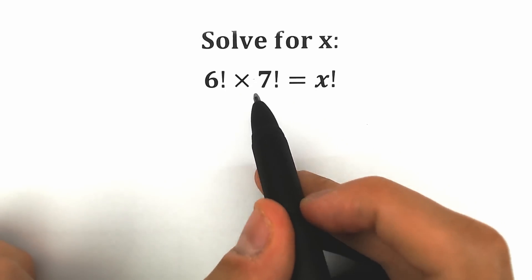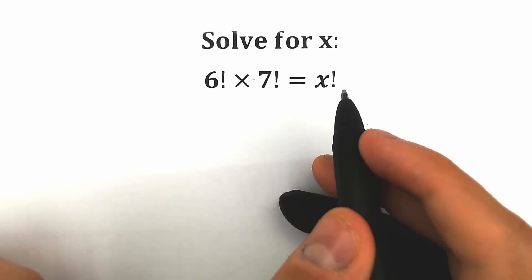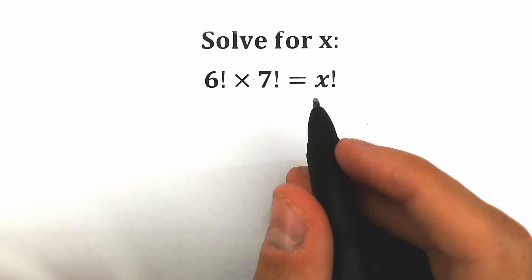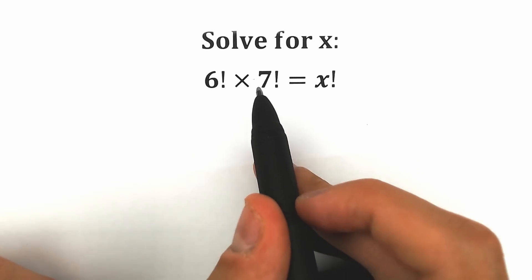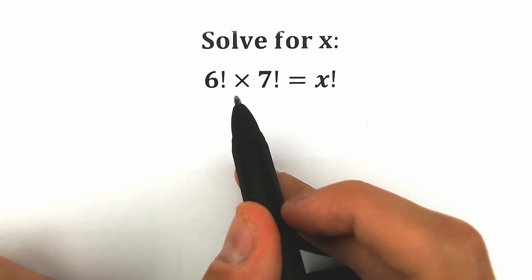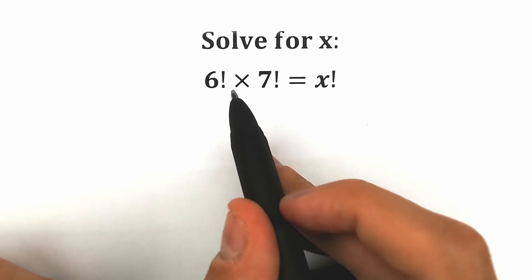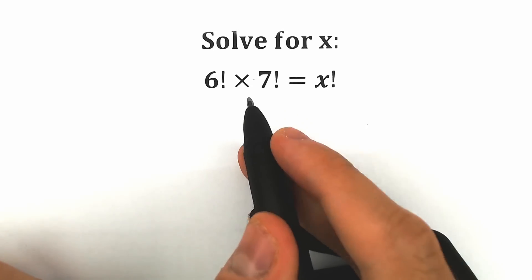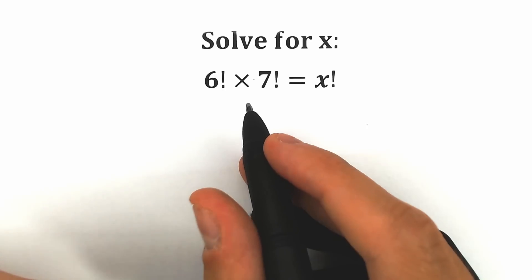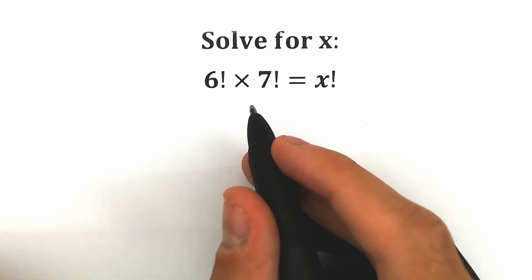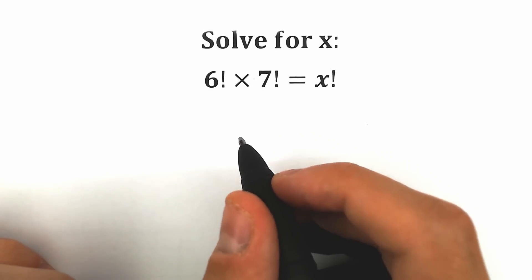We have 6 factorial times 7 factorial equal to x factorial. A lot of students might say this is a very easy challenge — if we multiply 6 factorial times 7 factorial, maybe we'll have 42 factorial, since we can easily multiply 6 times 7. But in terms of math it doesn't work like that, so in this video I'm going to show you a really great property for how we can solve this interesting question.